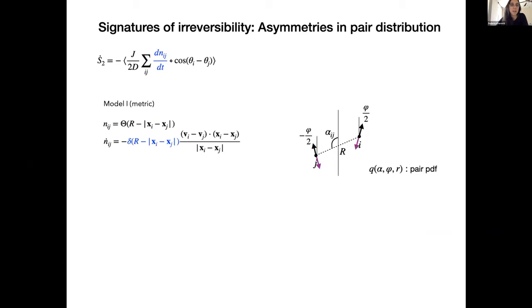In the remaining time, I want just to mention how we detected signatures of irreversibility in steady state distributions. Again, we restarted from this expression of the entropy production rate for the active XY model that is interpreted as the work of fictitious reshuffling forces. And here we need to compute the derivative with respect to time of the NAJ matrix. This is easy to do if we use this parameterization for NAJ that we used in the metric model. And this gives when we compute the time derivative, a delta function that only selects pairs of particles at a distance equal to the interaction radius. And multiplies this by this factor that is proportional to the projection of the velocity vectors onto the distance vector that connects bird I with bird J.